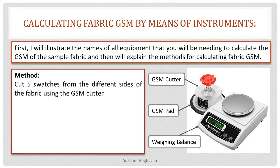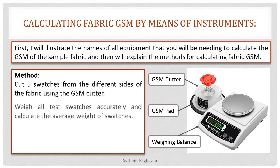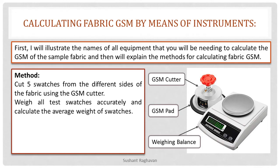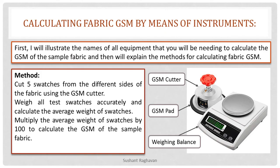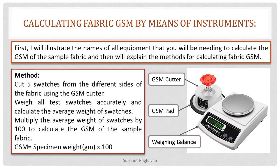Method: Cut five swatches from the different sides of the fabric using the GSM cutter. Weigh all five swatches accurately and calculate the average weight of swatches. Multiply the average weight of swatches by 100 to calculate the GSM of the sample fabric. GSM equals specimen weight in grams multiplied by 100.